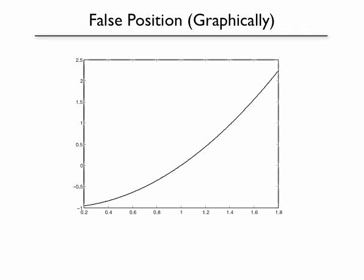So we calculate the function at those points, and we get f of x upper and f of x lower. One is above zero, one is below zero, so we indeed have our root bracketed.